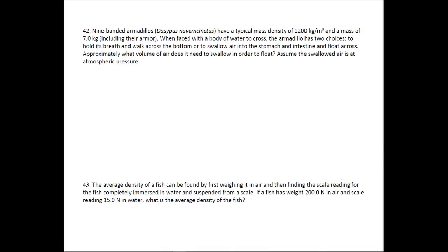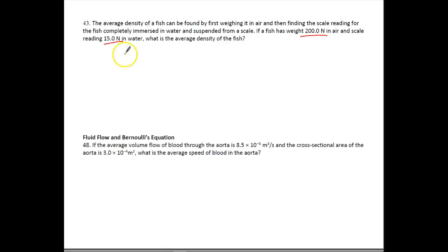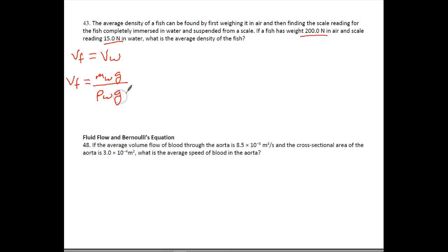For number 43, it says the average density of a fish can be found by first weighing it in air and then finding the scale reading when it's completely immersed in water. If the fish has a weight of 200 newtons in air and the scale reading is only 15 newtons when the fish is in water, what is the average density of the fish? The final volume equals the volume of water displaced, which equals the mass of water times gravity divided by the density of water times gravity — we added gravity on top and bottom so they cross off, which gives us the weight of that displaced water.